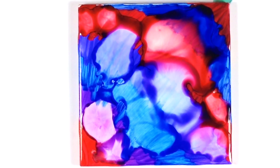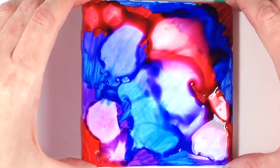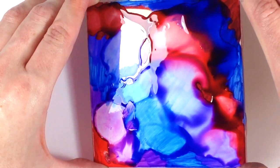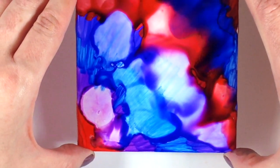Another technique you can use with alcohol ink is picking up your tile and tilting it slightly to let the alcohol move around on the tile.